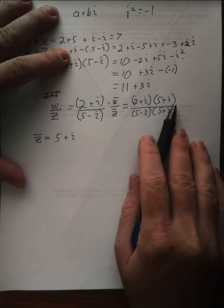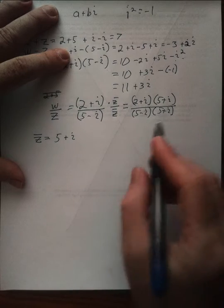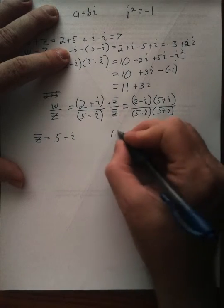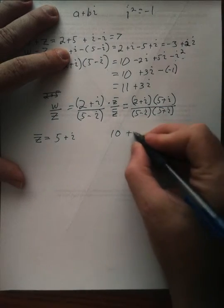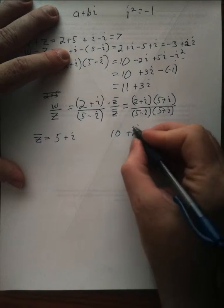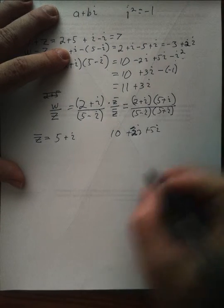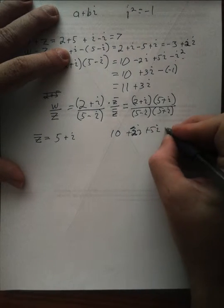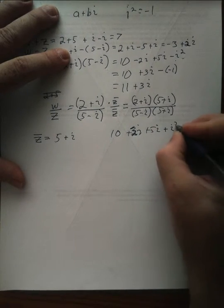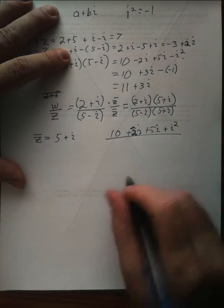All right, so up top, we have to FOIL that out. Now, 2 times 5 is 10 plus 2i, that's a 2, plus 5i plus i squared. That's what's up top.